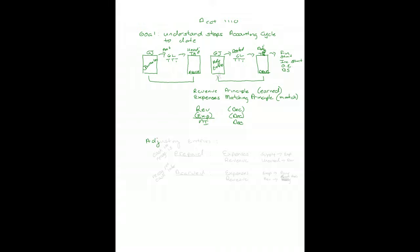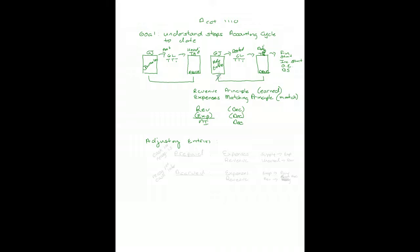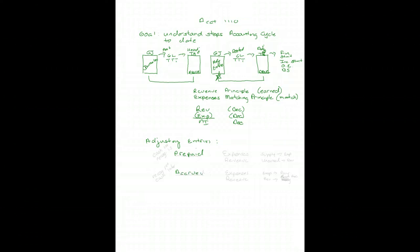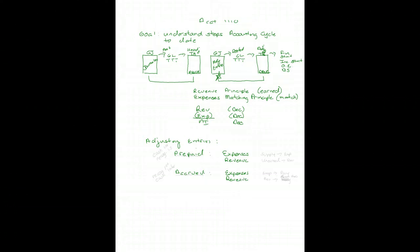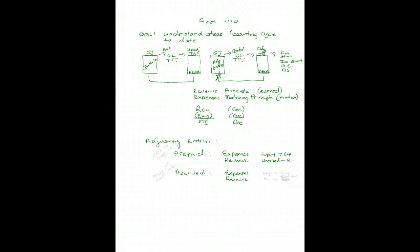We had adjusting entries that we learned how to make to accomplish this, and they are made right here in the accounting cycle. There were some adjusting entries caused by prepaid items and some caused by accrued items. The prepaid items related to expenses and revenue. For prepaid expenses, we usually set up a supply or prepaid asset and then moved it into an expense as it was consumed. For revenue, we set up an unearned revenue and moved it into revenue when it was earned.